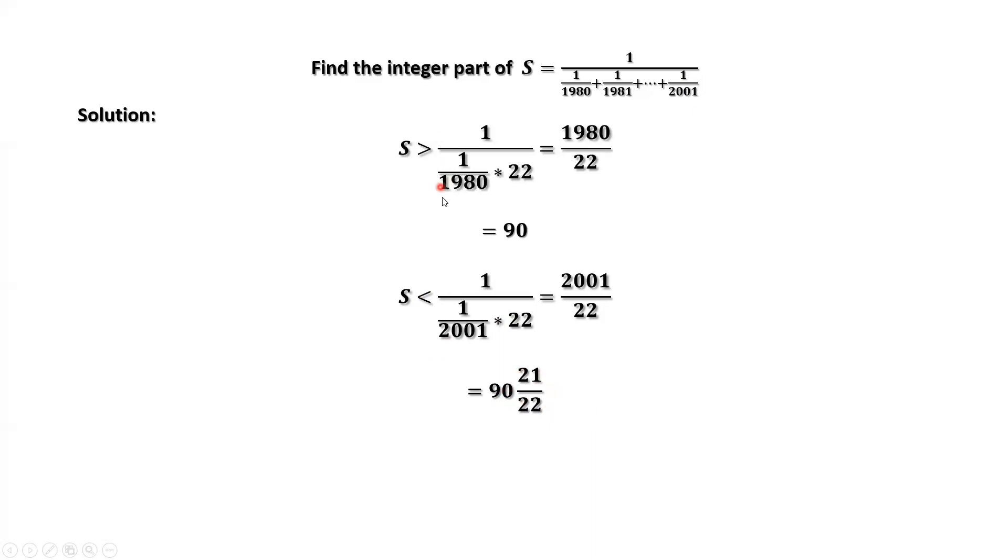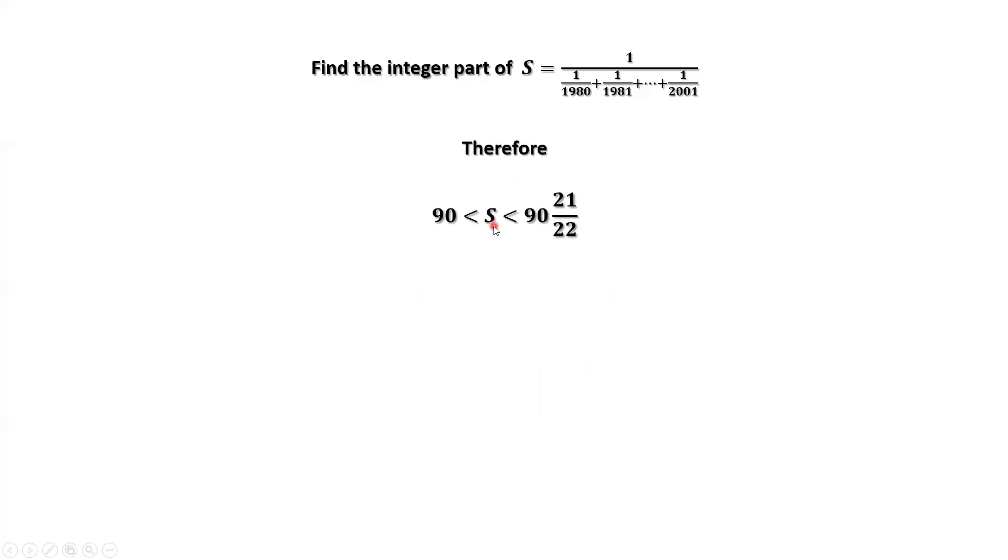Combining both results, we have S is between 90 and 90 and 21 over 22. The question is, what is the integer part of S? From this result, we can see that the integer part of S is 90. That's all. Thanks for watching, and see you next time.